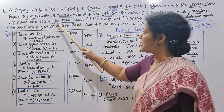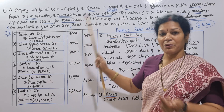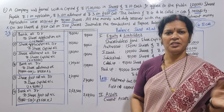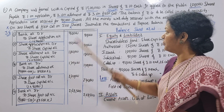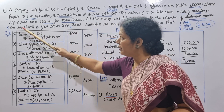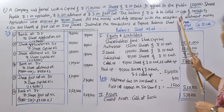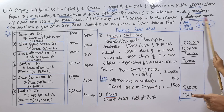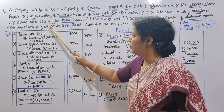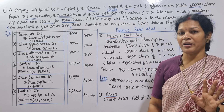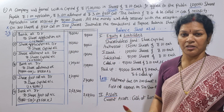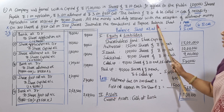Applications were received for 90,000 shares only, against the 1,00,000 shares issued. All money was duly received with the exception of allotment money on 200 shares and first call money on 500 shares. Now we need to journalize transactions and prepare a balance sheet.